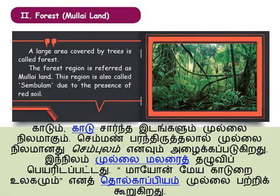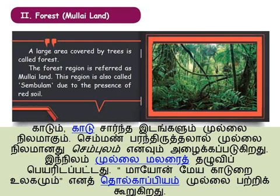Now we will see the second area — it is the forest, or Mullai land. A large area covered by trees is called a forest, and a forest region is called Mullai land. It has another name: Sembulam (S-E-M-B-U-L-A-M). It is called Sembulam because of the presence of red soil — the soil in that area is red in colour.